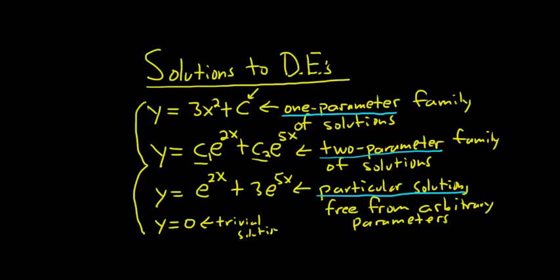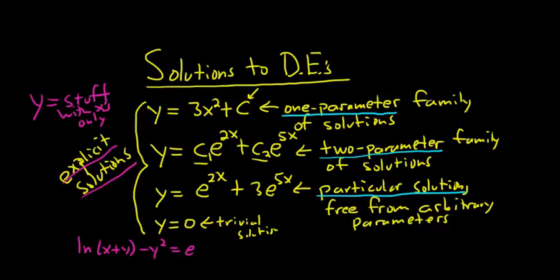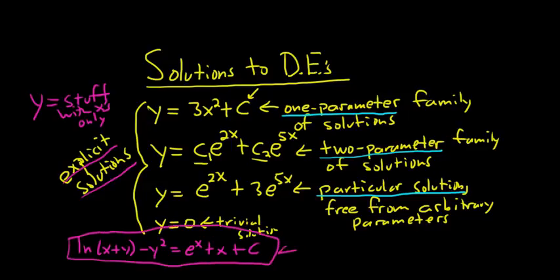All of these are called explicit solutions, because we have y explicitly defined in terms of x — they all look like y equals some expression in x only. If y is not explicitly given by a formula in terms of x, you have what's called an implicit solution. For example, ln(x) plus y minus y squared equals e^x plus x plus c is an implicit solution.